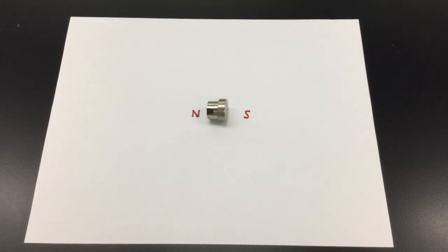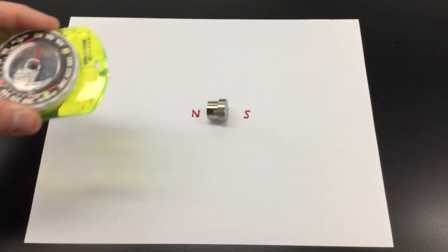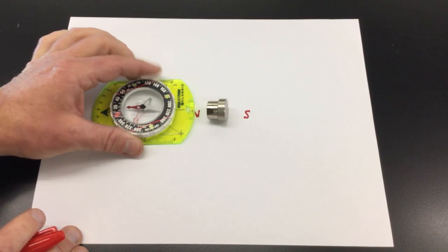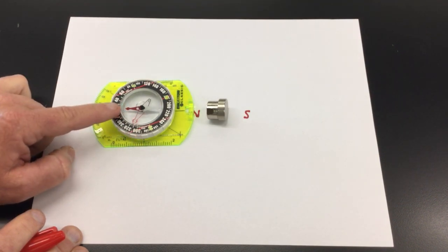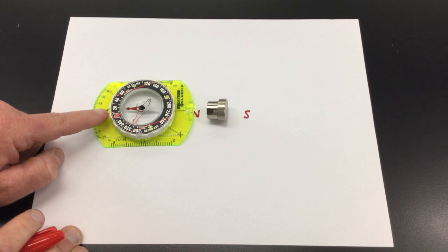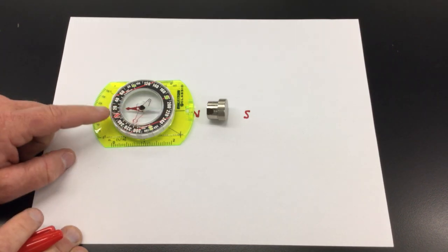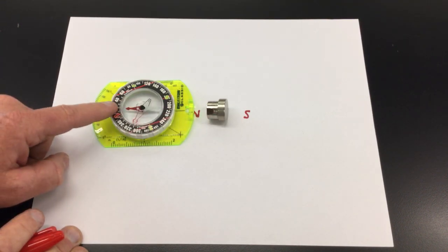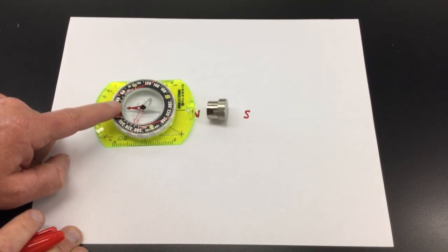If you bring another magnet nearby, so this is just a little compass with a skinny little magnet, if you bring it over here, you notice the red side of this points away from the North Pole. Well, with magnets, opposite poles attract, and like poles repel. So if that's a North Pole, then the side that's repelling or pointing away must be also the North Pole.